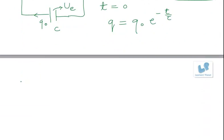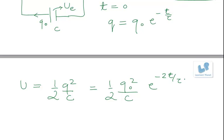And energy, electrostatic energy that is stored is given by half Q squared by C. So this can be written as half Q0 squared by C e to the power minus 2T by Tau.